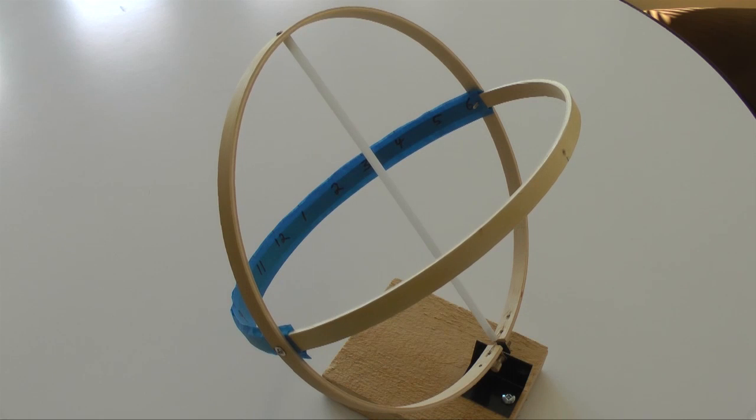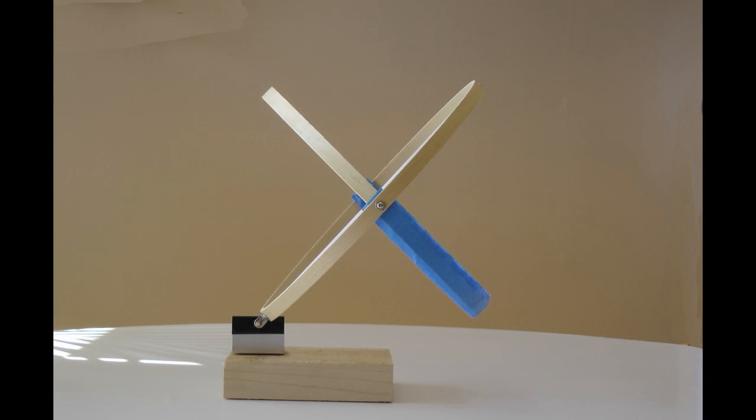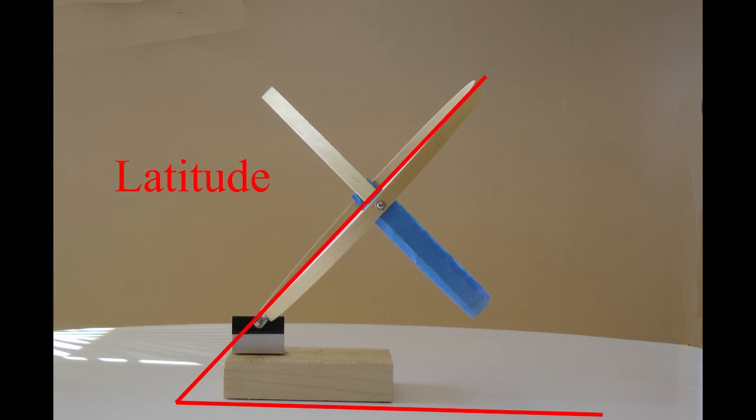The armillary sundial is finished. Now to align it. The angle between the ground and the axes must be your latitude. My latitude is 45 degrees north.